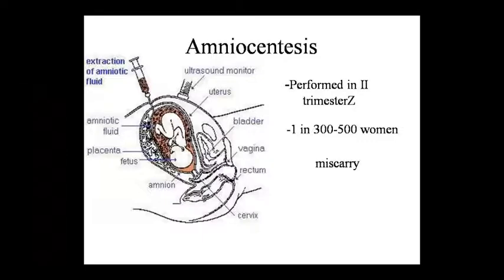The first technique we are discussing is amniocentesis. It is one of the best-known prenatal diagnostic techniques for certain congenital disorders. It is usually performed between the 13th and 15th weeks of pregnancy. In this procedure, a careful evaluation of the location of the placenta and fetus is done with an ultrasound. Then a thin hollow needle is inserted into the woman's uterus through the abdomen under local anesthesia, guided by ultrasound, avoiding damage to placenta and fetus.